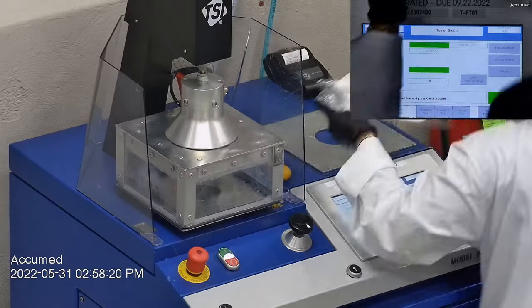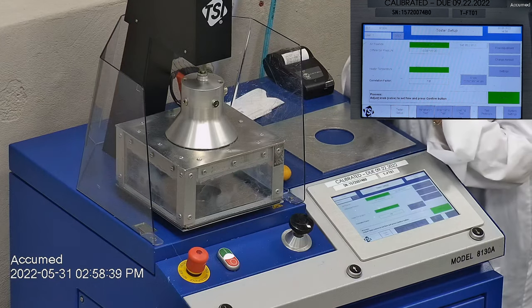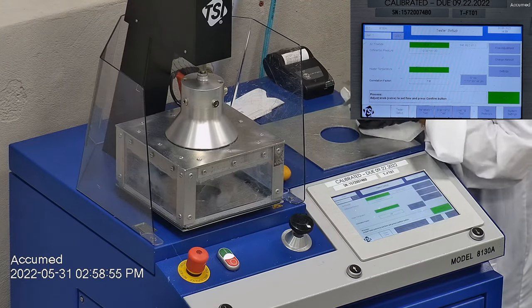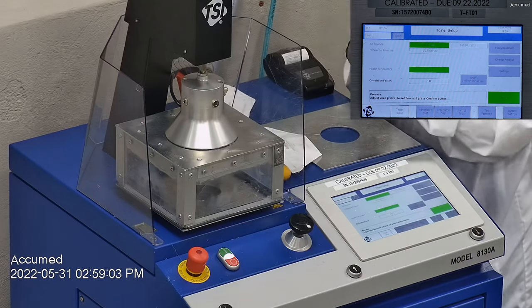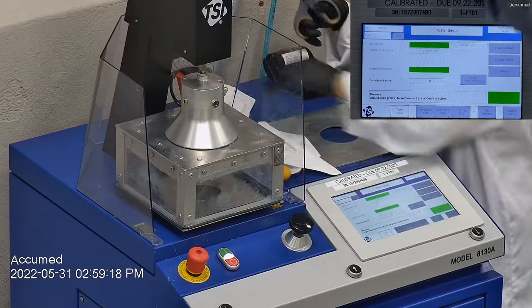This is our TSI machine model 8130A, which is also the same filtration testing machine that NIOSH uses to approve N95 respirators. Our procedure is inspired by NIOSH. We first run a tester setup and start removing the headband from the respirator before placing it onto the testing plate to ensure a proper seal.